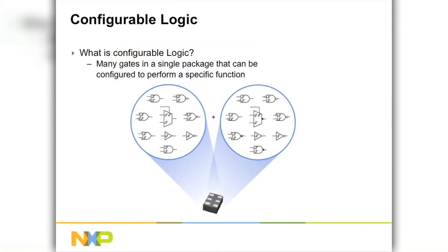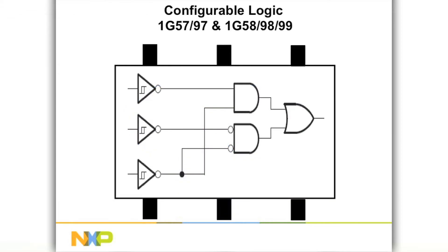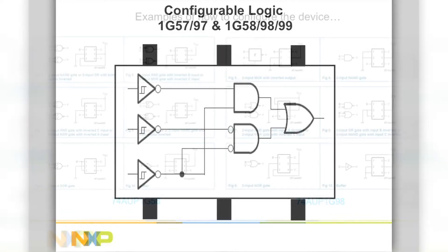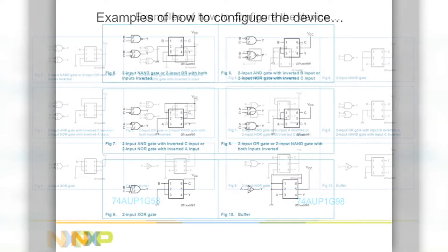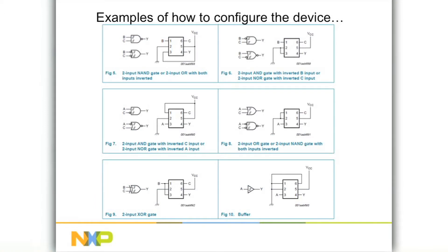What is a configurable logic device? A configurable logic device is a device that comprises six discrete logic functions in one package. And depending on how the device is configured or hardwired on the PC board, you can have the device perform one of nine different functions. Here I have some block diagrams of how the device is laid out on the PC board to perform one of these different functions. This device is very popular among design engineers as it offers them the flexibility to build any one of these nine different functions.